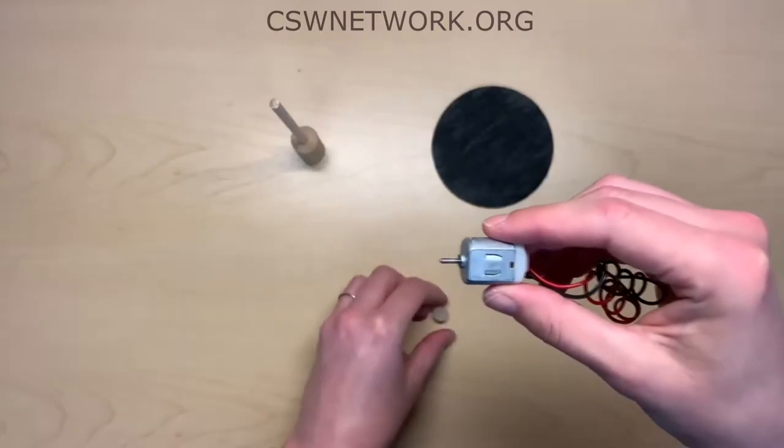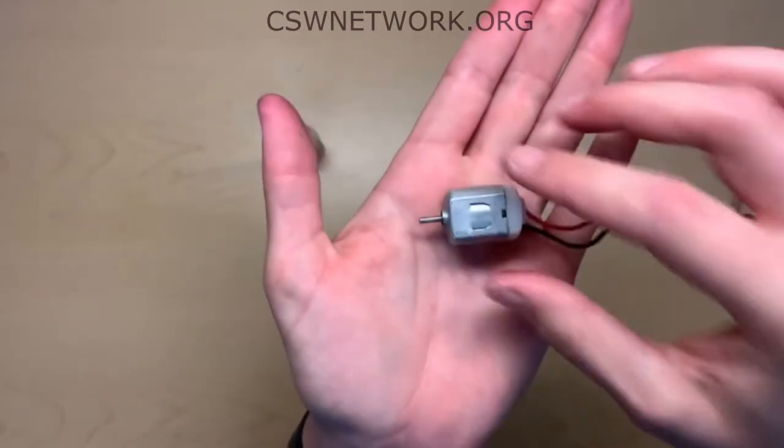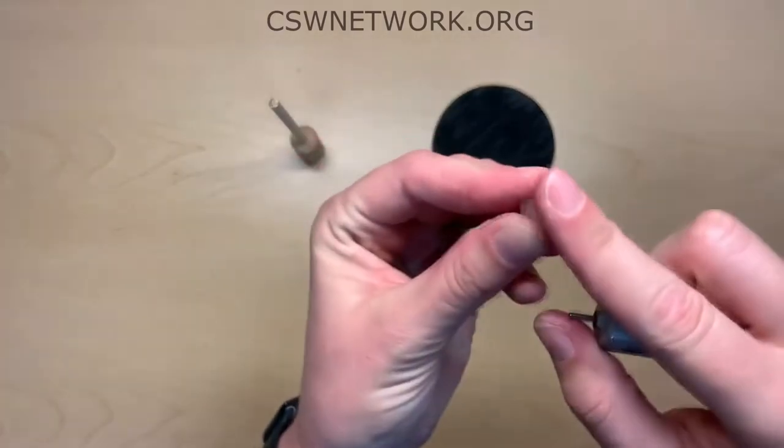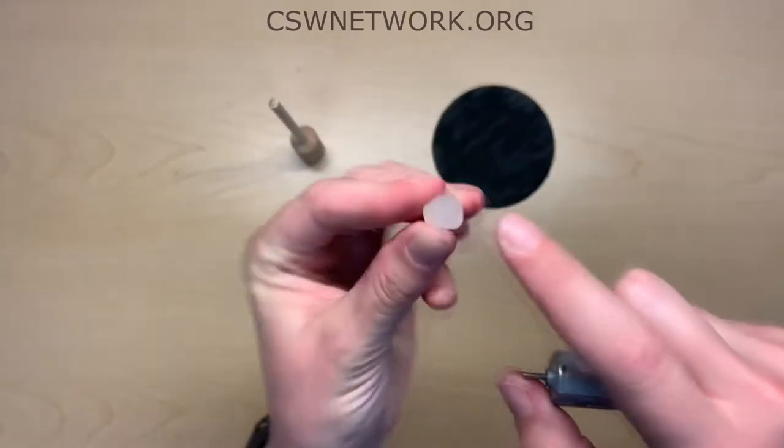Insert the shaft of your motor about three-fourths of the way into the flat face of the glue stick nubbin. Inserta el eje de tu motor como a tres cuartos partes a uno de los lados planos de tu trozo de pegamento.